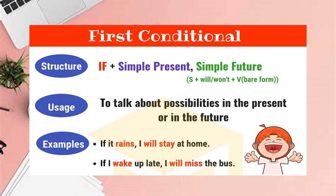Here is the conclusion of this lesson. For the first type conditional sentence: in the if clause we use simple present tense; in the main clause we use simple future tense — will plus a verb. We use it to talk about possible results of something that is likely to happen in the present or in the future. I hope after watching this video you will have a better understanding of the first type conditional sentence. Thank you.